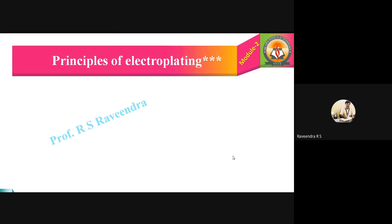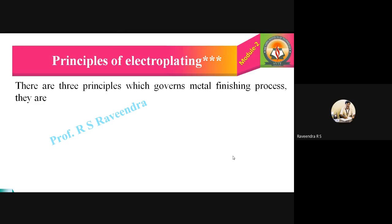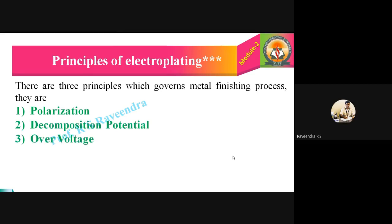Hi all. In this video, let us learn the various types of principles which govern the electroplating processes. There are three principles which govern the metal finishing processes — the entire process of electroplating depends upon three important principles: polarization, decomposition potential, and overvoltage.